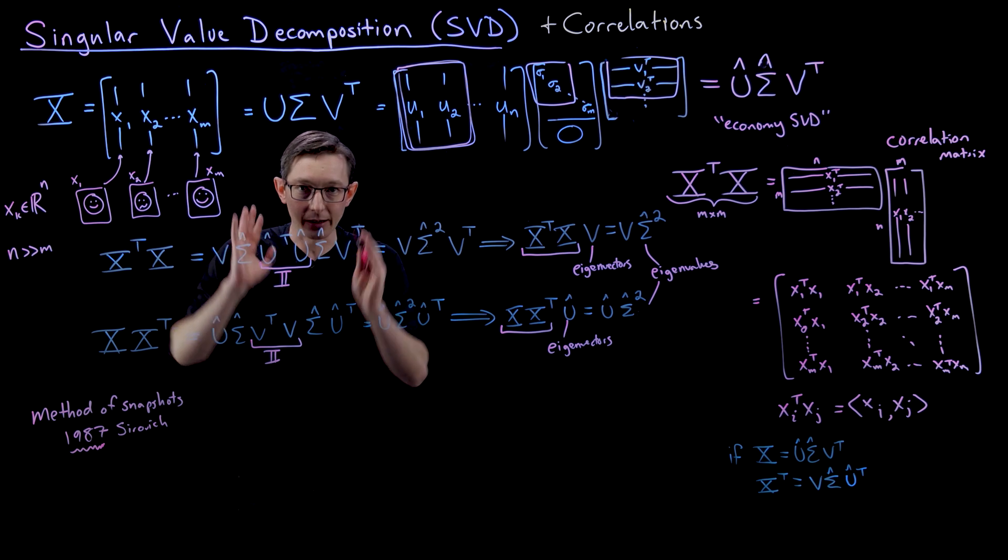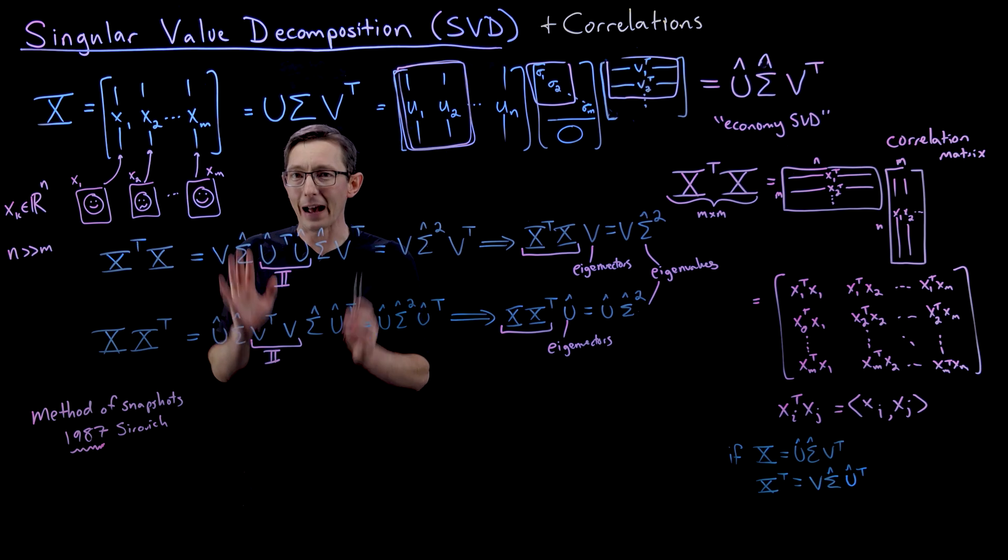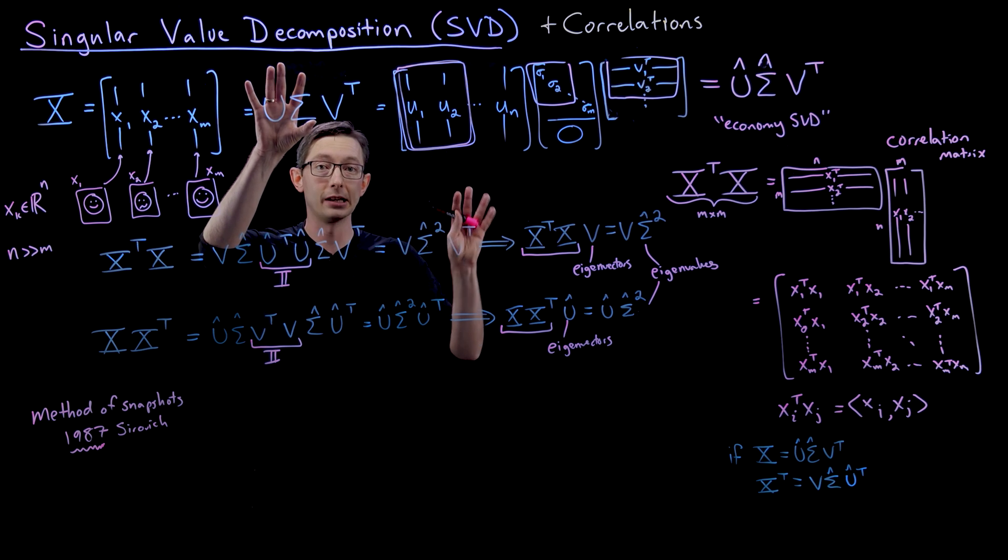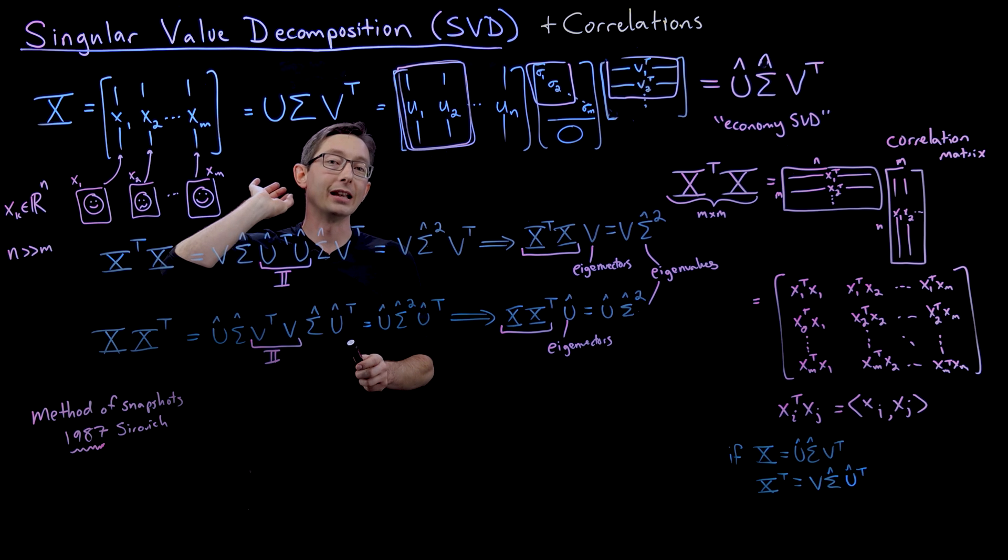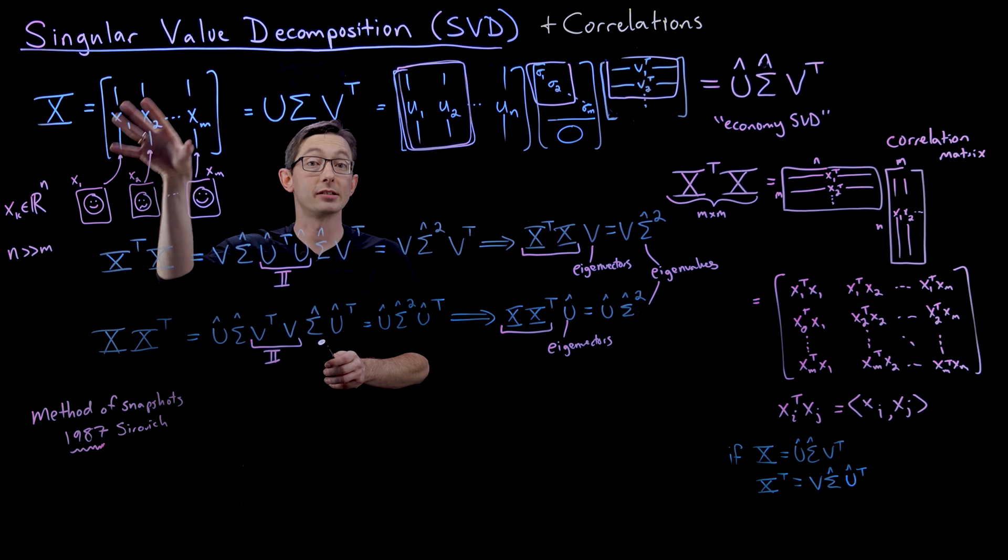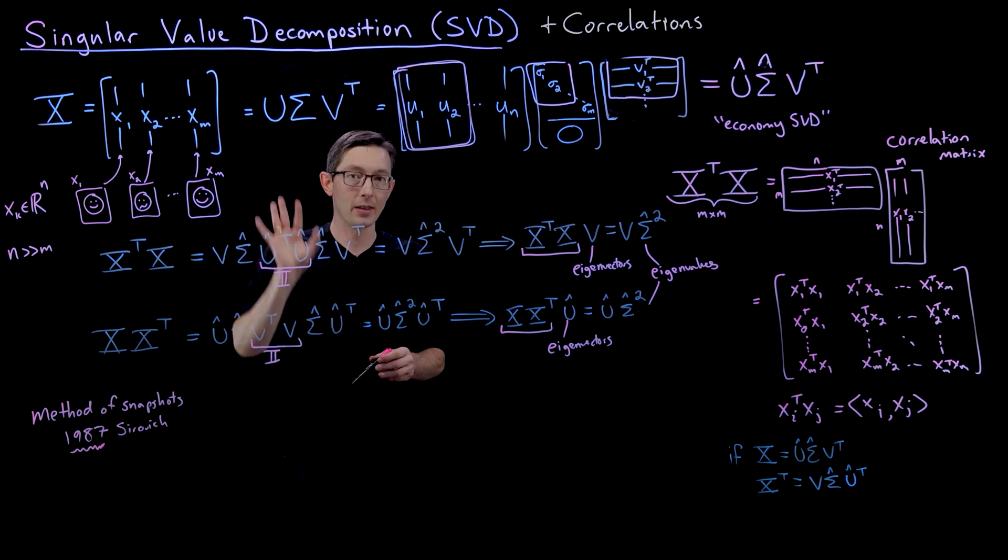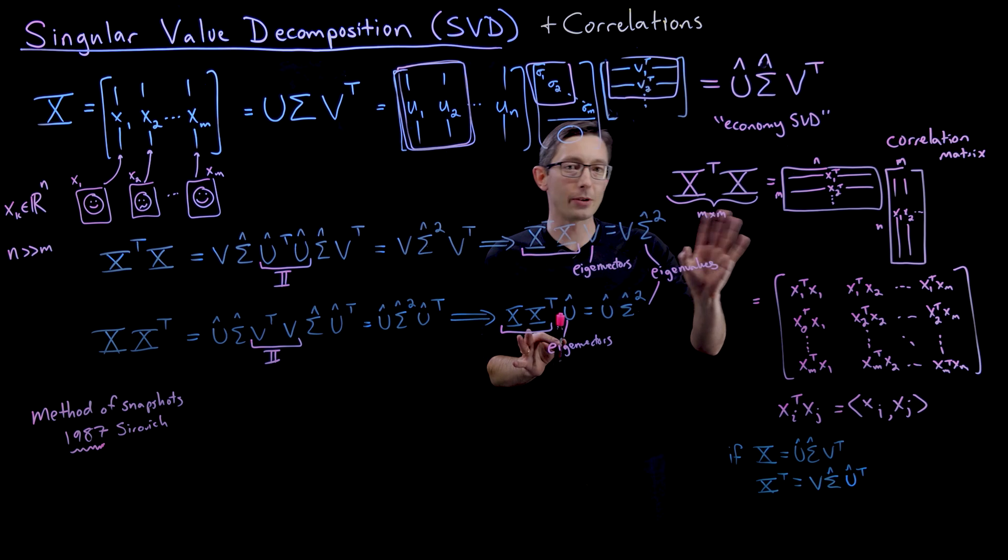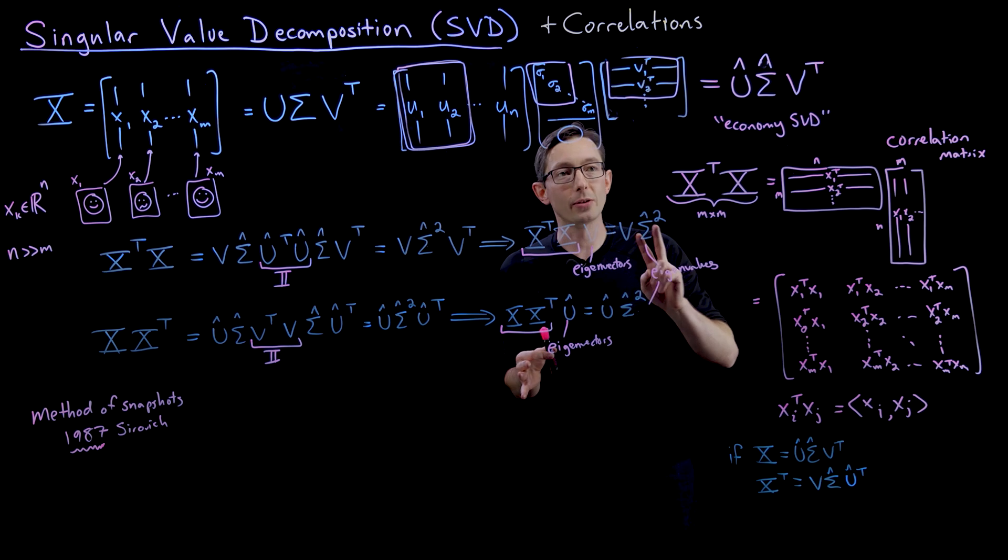I want to be very clear: in the vast majority of cases, I do not recommend you compute the SVD using correlation matrices. But in the rare occasion that this matrix is so big you can't load it in memory, here's what you can do.